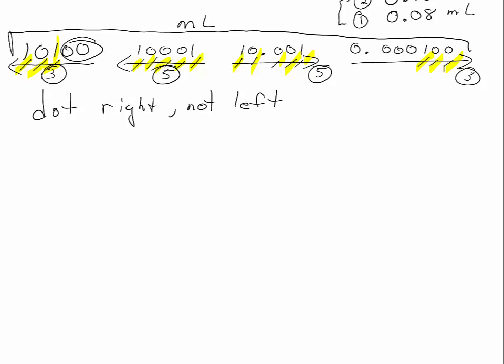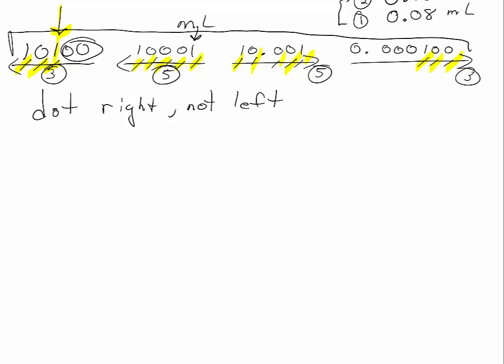Where are these values precise to? If there is no decimal, the value is precise to the place where you first started counting — the hundreds place in one case, the ones place in another. If there is a decimal in the number, the value is precise to the last place counted, which is the last digit shown in the value.